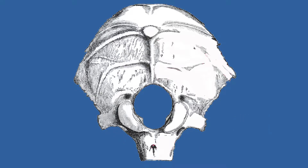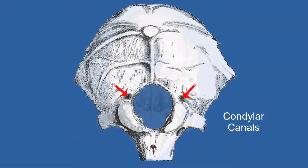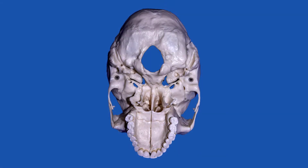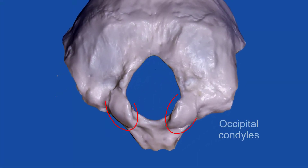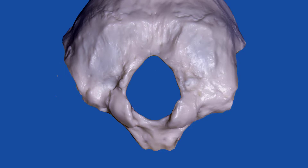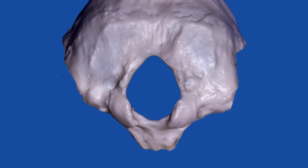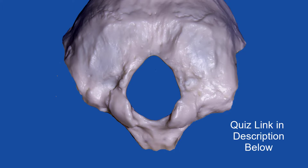Here again are the jugular notches, visible in this figure. Also behind the condyles there are openings which lead to what are called the condylar canals. If we take a look at an inferior view of the plastic skull and look closely at the occipital bone, we can see the occipital condyles, but you will not find the condylar canals. This is actually an example of anatomical variability — in some skulls you find condylar canals, but in other skulls you don't.